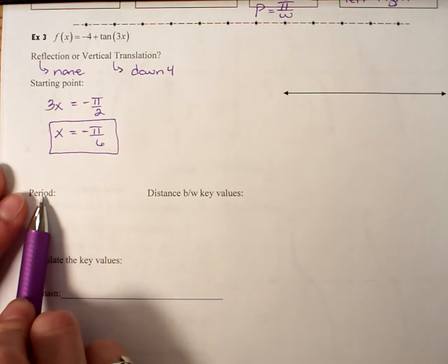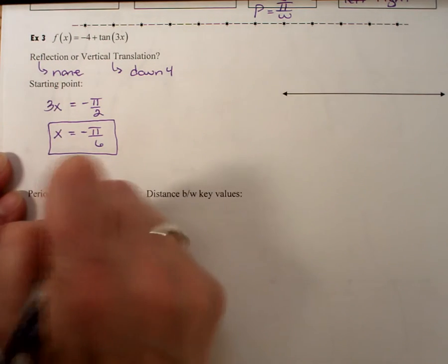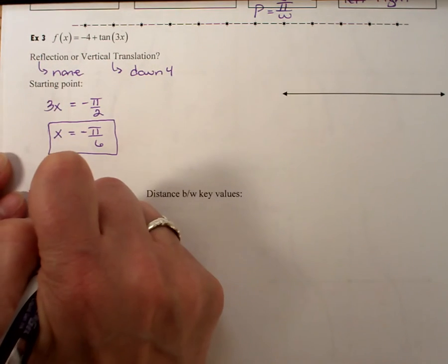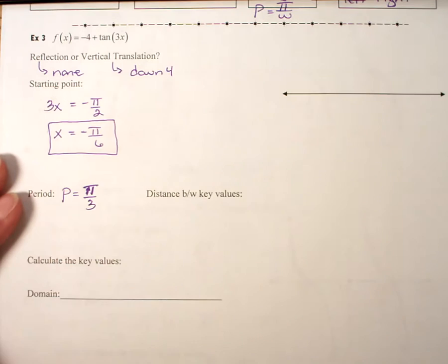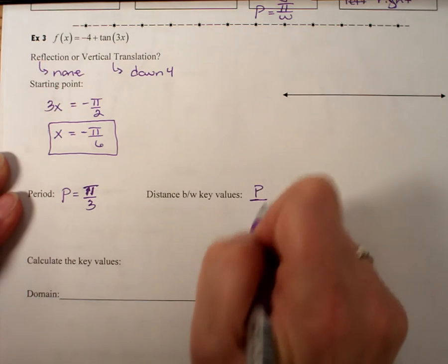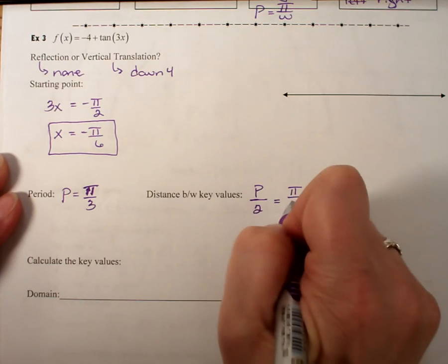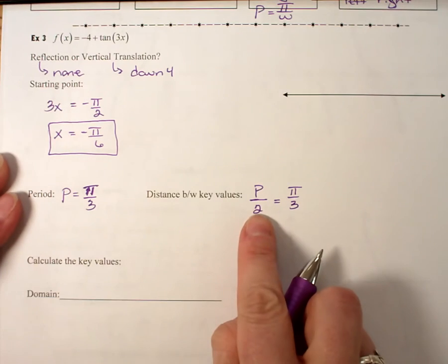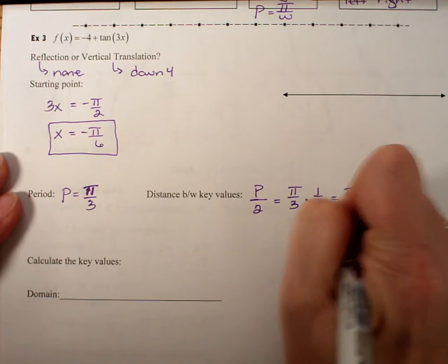The next thing that I'm going to do is find my period. So my period is going to be just π over that coefficient of 3, or π/3. The distance between the key values, remember on tangent, we're just going to divide that into two pieces. So I'm going to take my π/3, and instead of writing divided by 2, I'm going to think multiply by 1/2, or π/6.